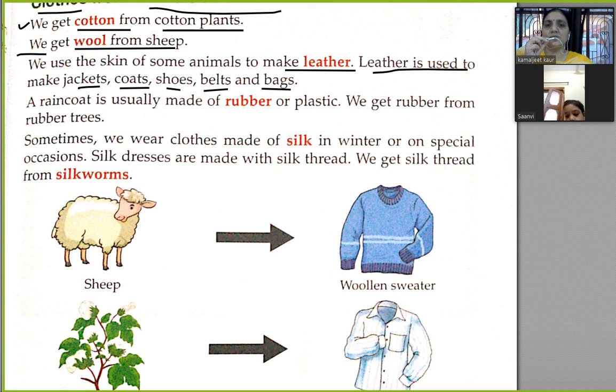Our raincoat is usually made of rubber. We get rubber from the rubber tree.